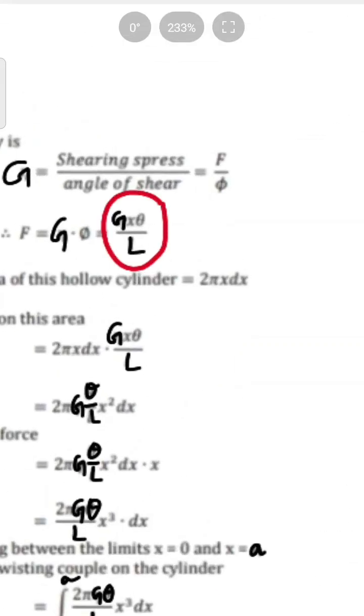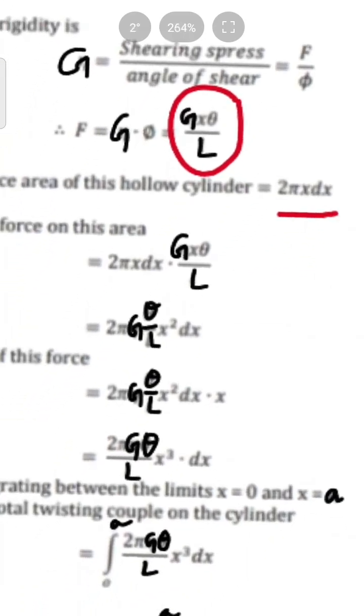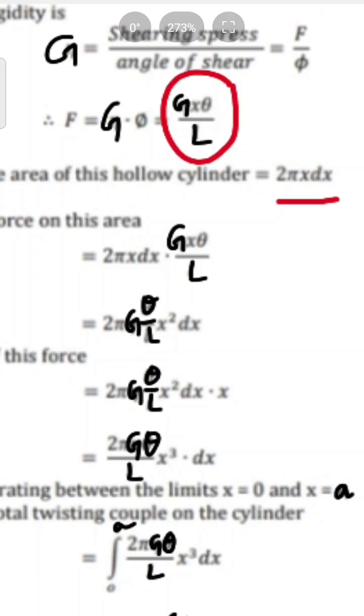Modulus of rigidity G is equal to shearing stress divided by phi. So shearing stress f is equal to G·phi, and since phi equals x·theta divided by L, we get f = G·x·theta/L. The surface area of this hollow cylinder is 2·pi·x·dx. The total shearing force is the surface area multiplied by the stress: 2·pi·x·dx · G·x·theta/L.